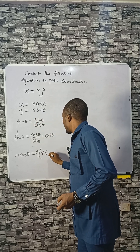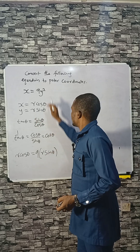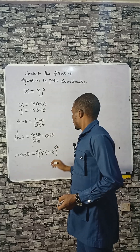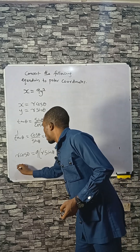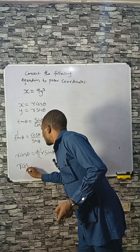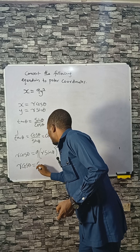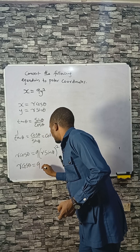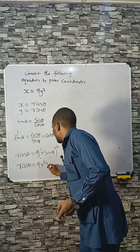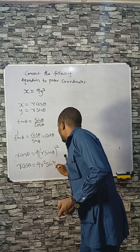For Y, we put R sinθ, but don't forget that Y is squared here. So R cosθ equals 9 times R² sin²θ.